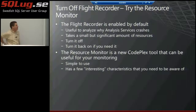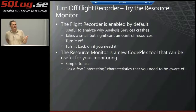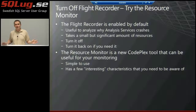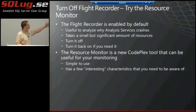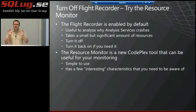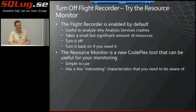Next topic — actually two topics on the same slide. The flight recorder is a built-in monitoring tool in analysis services, turned on by default. The SQL CAT team says: turn it off. It gives you information in case your server crashes, but hopefully your analysis server doesn't crash very often. If you're not having a problem with analysis server crashing, turn it off. It's a small but significant performance difference — it takes resources that don't have to be used. Very easy to turn it off, and turn it back on if you have a crash.